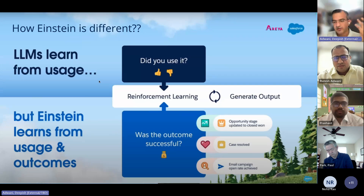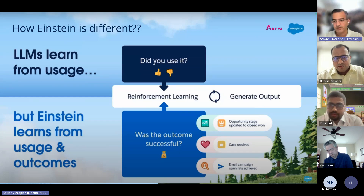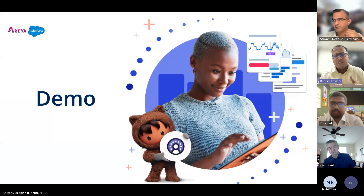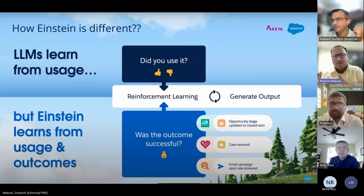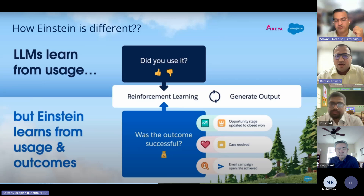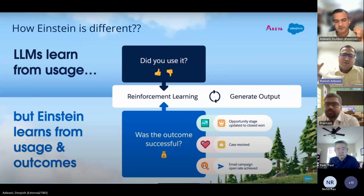We can use LLMs from outside. Some companies like Google and Meta have better models and algorithms that can be leveraged. However, Einstein does it internally — data is used internally, and the outcome is learned from internally. Instead of an LLM using predictive data from external usage, Einstein learns from the actual results happening within the system.